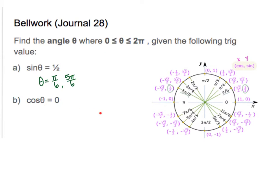Now I'm going to try this for cosine. When is cosine 0? Cosine is the x value, so x is 0 at pi over 2, and x is 0 at 3 pi over 2. So theta is pi over 2 and 3 pi over 2.